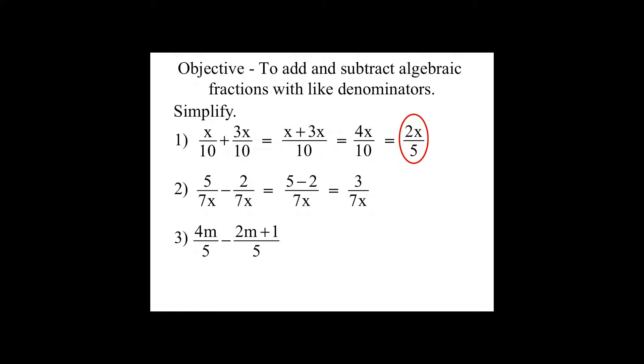Now when I have a subtraction sign, what that really means is I'm subtracting that entire fraction, so I have to subtract that entire binomial. So that negative is going to have to be distributed in the numerator only.